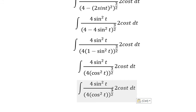4 to the power of 3/2 equals 8. Cosine squared t to the power of 3/2 equals cosine cubed t.